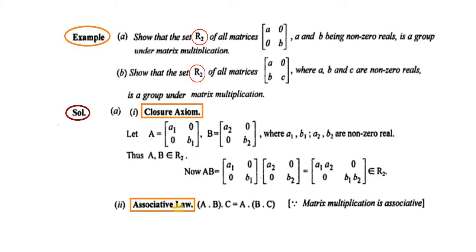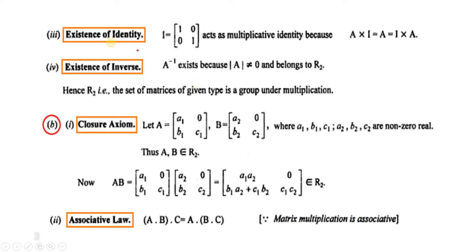Ag associative property check kiya hai: if we take three diagonal matrices and check the associative property of multiplication, it will hold. So here humnye check kerna hai, second property hold karta hai — matrix multiplication is associative.